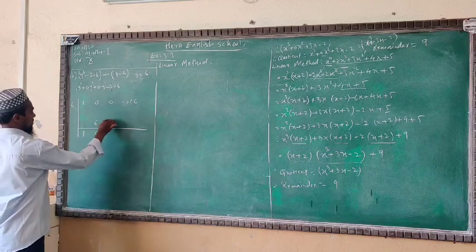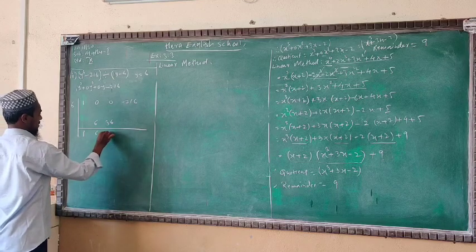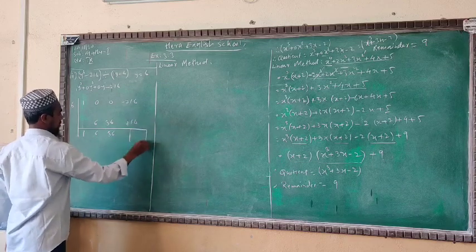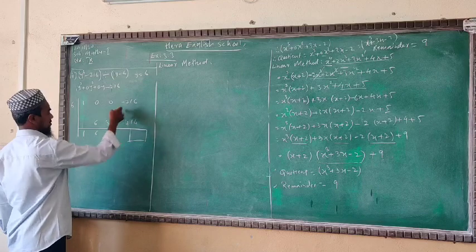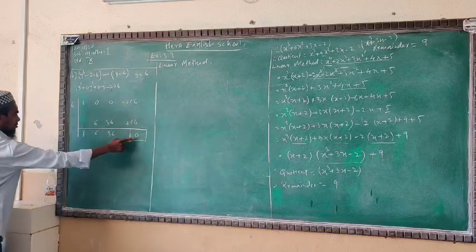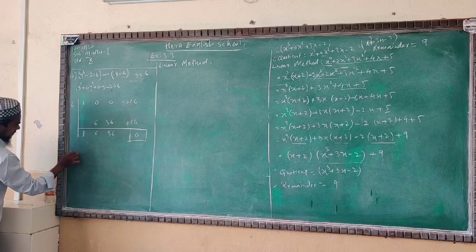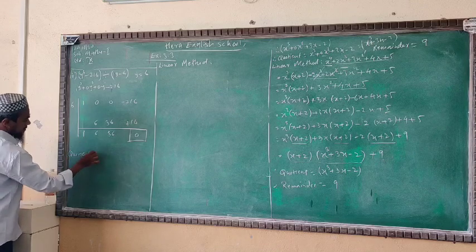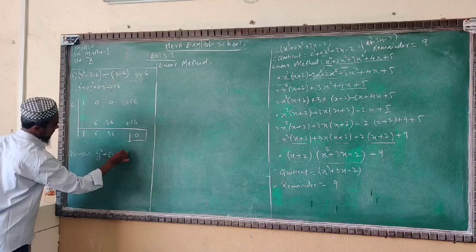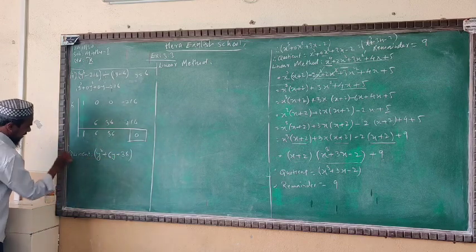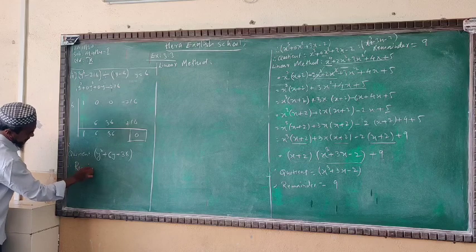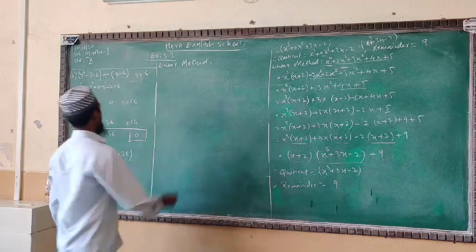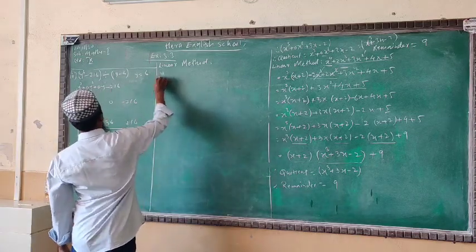Then 6 times 6 is 36; 0 plus 36 gives 36. Then 36 times 6 is 216; minus 216 plus 216 gives 0. The remainder is 0. The coefficient quotient form is 1, 6, 36, giving us y² plus 6y plus 36. Now we continue with the linear method, with divisor y minus 6.